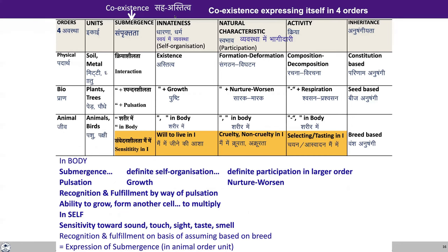Similarly, in the animal order, we can see that in the body there is definite self-organization just like the bio order, and there is definite participation in the larger order just like the bio order. There is recognition and fulfillment by way of pulsation, and there is ability to grow and multiply from another cell. In the self, we can see that there is sensitivity towards sound, touch, sight, taste and smell.